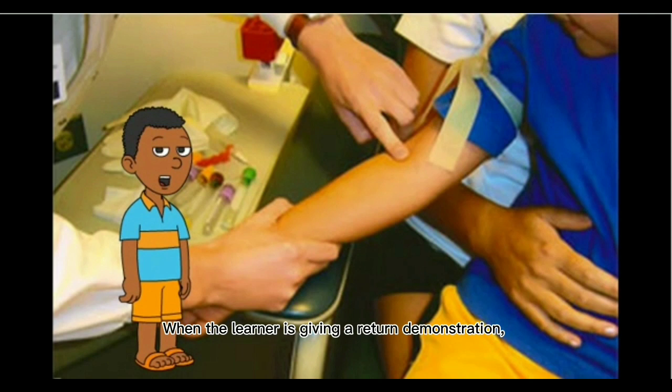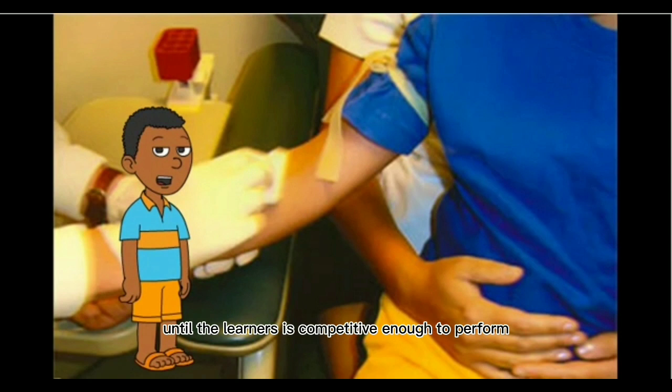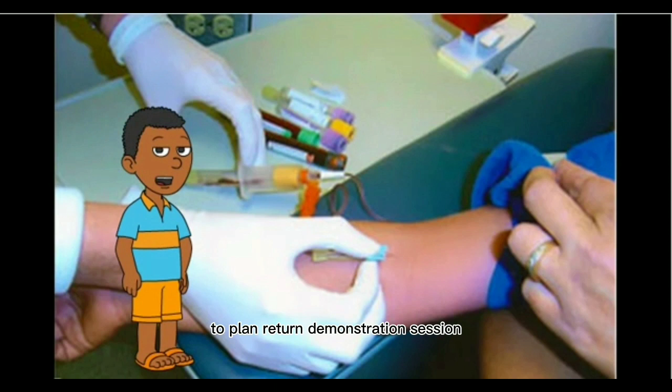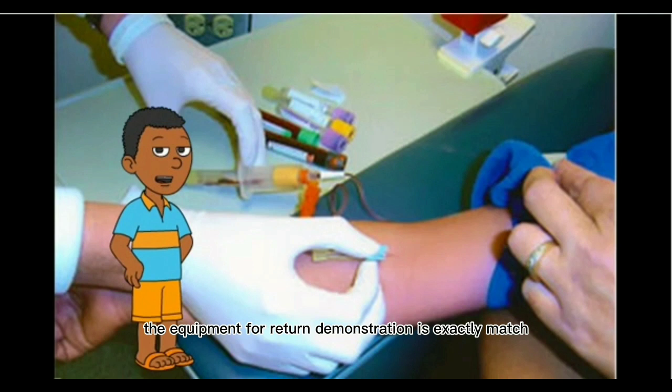Return demonstration should be planned to occur close to when the demonstration was given. When the learner is giving a return demonstration, the teacher should remain silent except for offering cues when necessary or briefly answering questions. Practice should be supervised until the learner is competent enough to perform steps accurately. It is very important to plan return demonstration sessions close enough together that the learner does not lose the benefit of the last practice session.